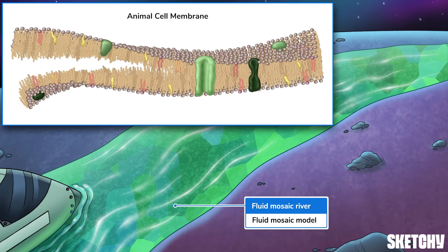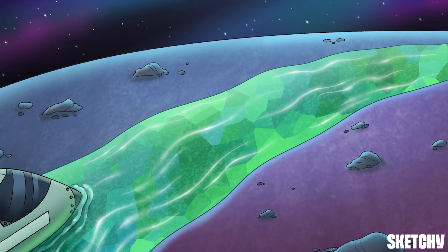The mosaic part of the fluid mosaic is because the cell membrane is composed of a variety of different lipids, proteins, and carbohydrates. Let's start by taking a look at those lipids.